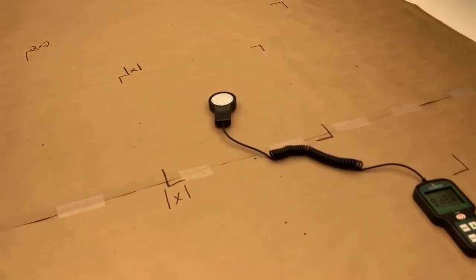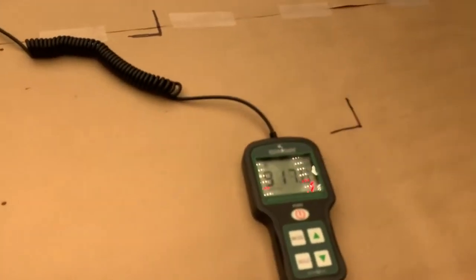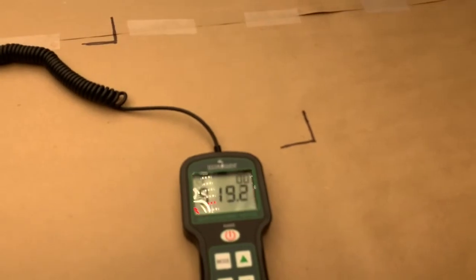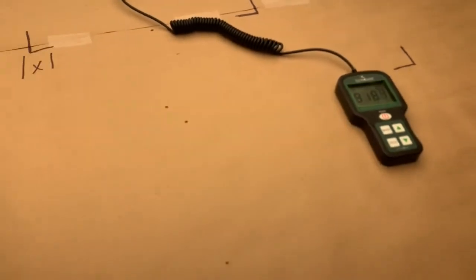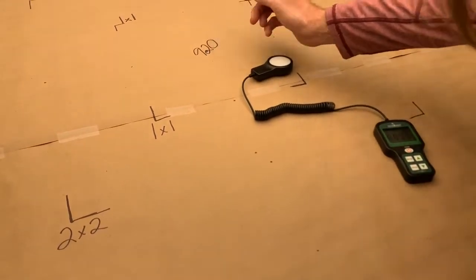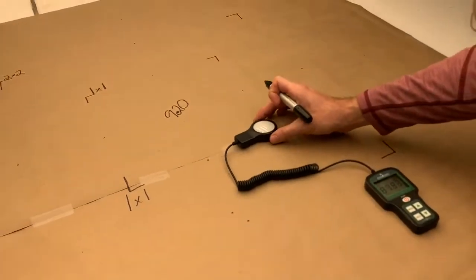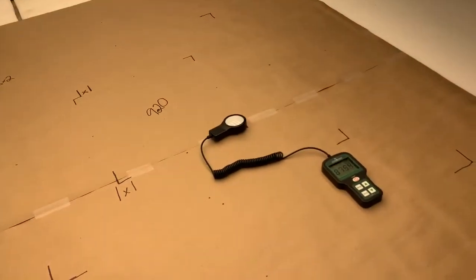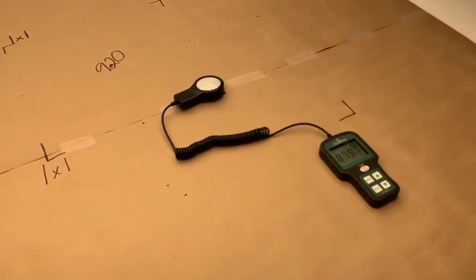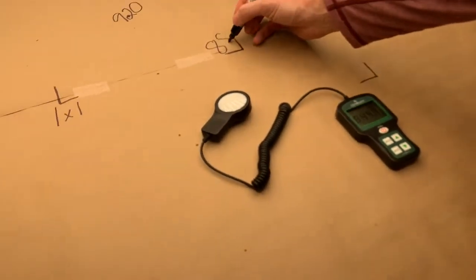So let's see—920 in the middle. Let's go to the edges, one foot out. We are at 880. These are some nice numbers.